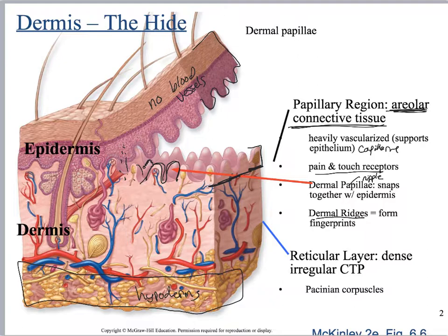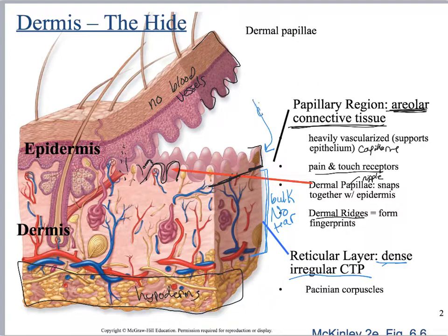The next area is going to be the reticular region, and this is composed of dense irregular connective tissue proper. You will notice that this is the bulk of the tissue. This is all about making sure your skin doesn't tear. The papillary region is all about keeping the epidermis alive. They are structurally slightly different for that reason, and we'll talk more about that on the next slide or two.